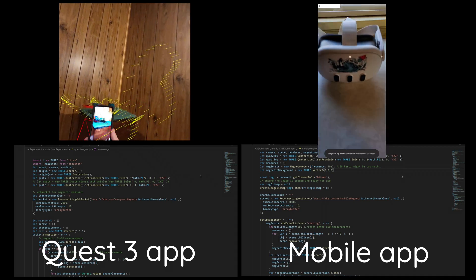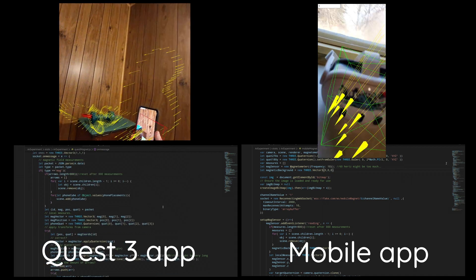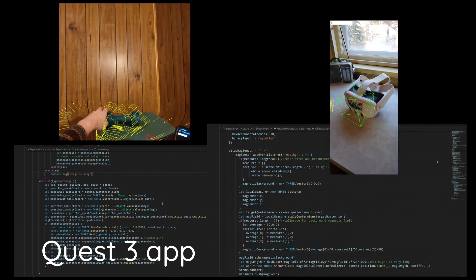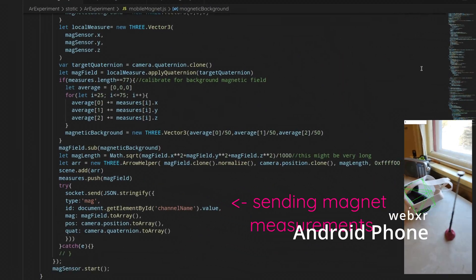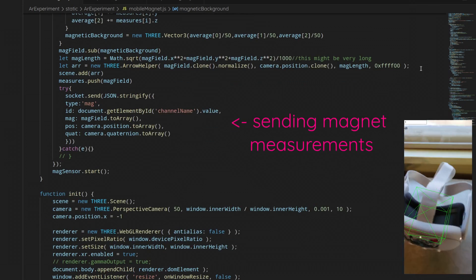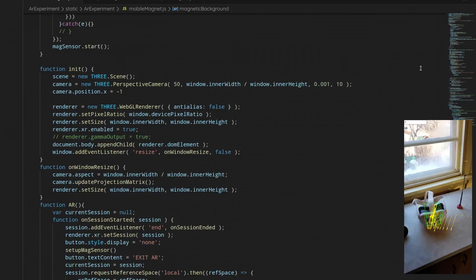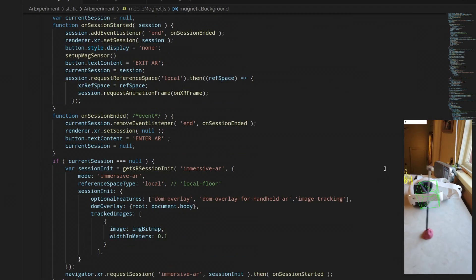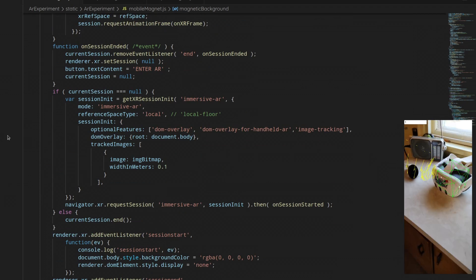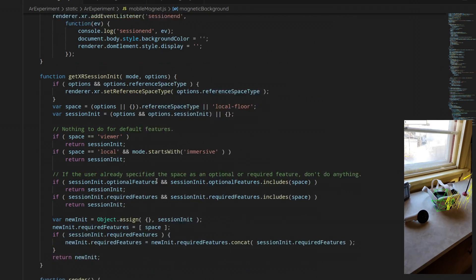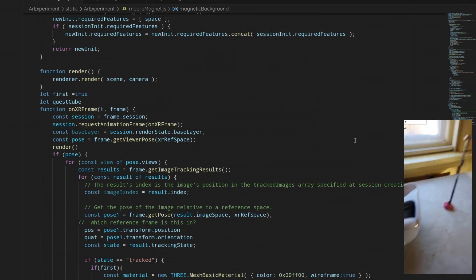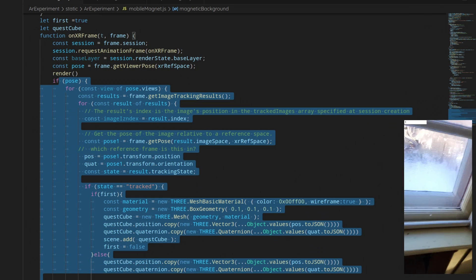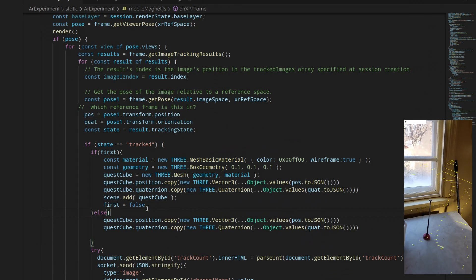I wanted to gloss over the code aspect. It's actually not too complicated. You have two different WebXR apps. The first one is the mobile app that records the magnetic field and has an open web socket which feeds the information across. It also does the image tracking, which is how we connect the two reference frames. It tracks the image on the Quest and sends that through the web socket so the Quest knows where it is relative to the camera.